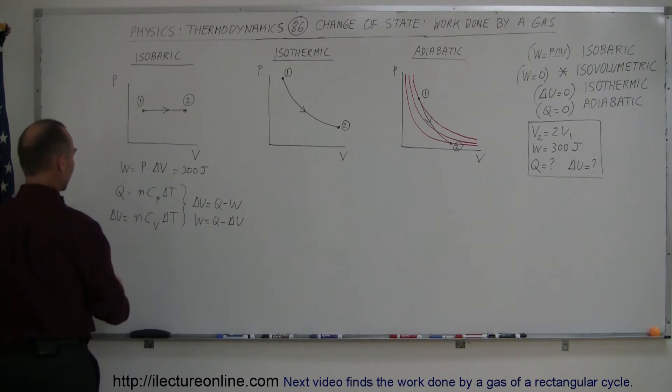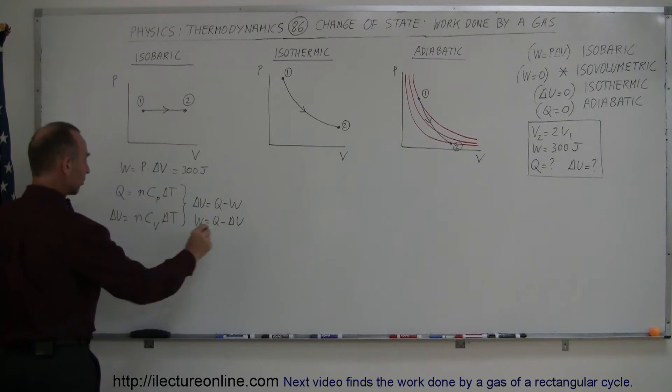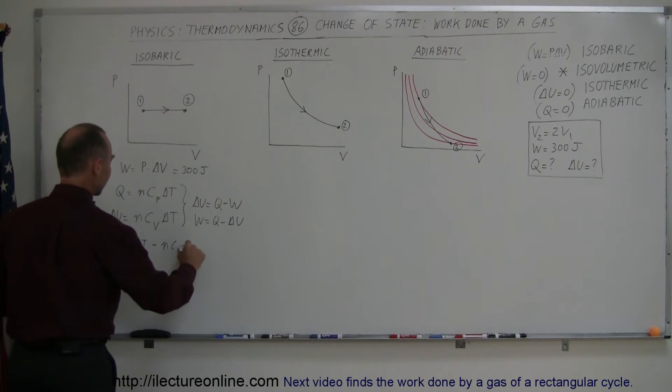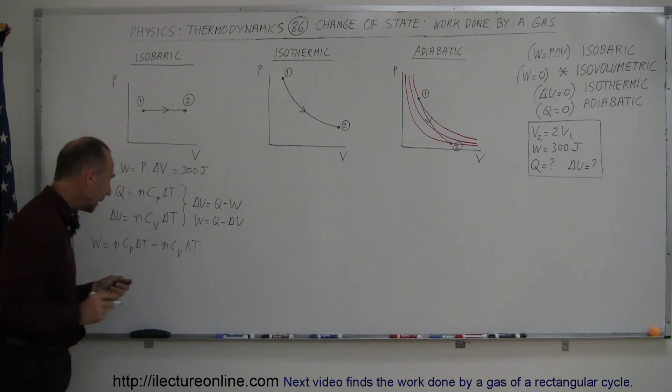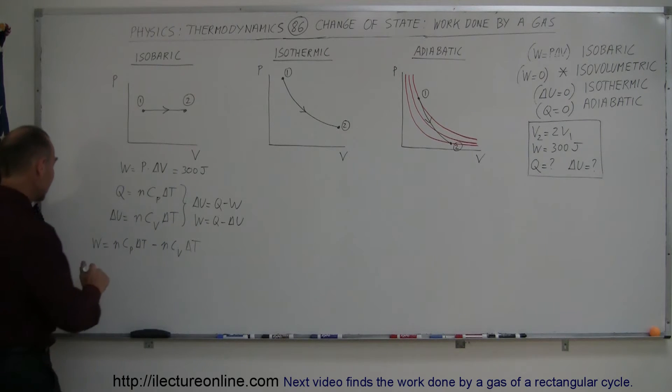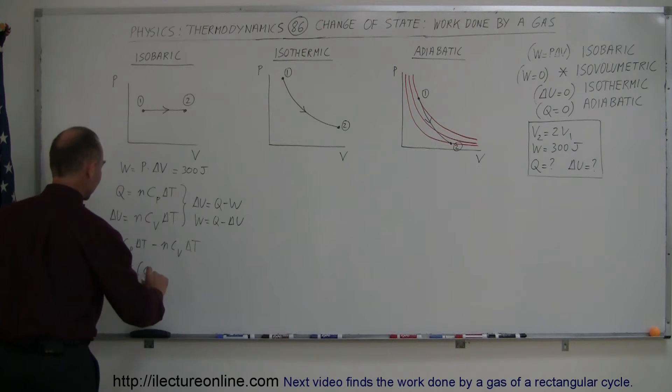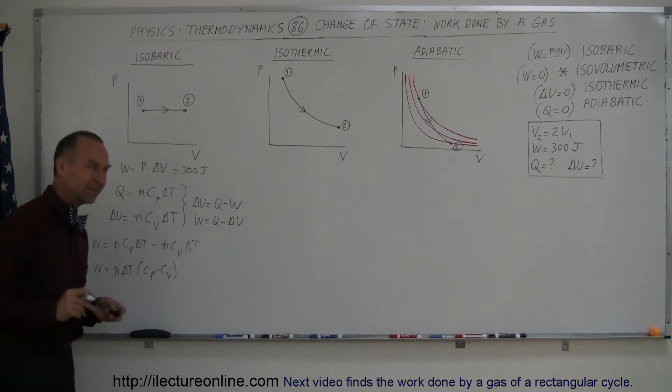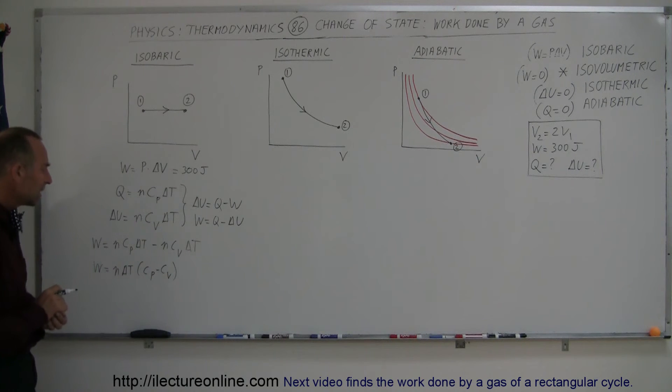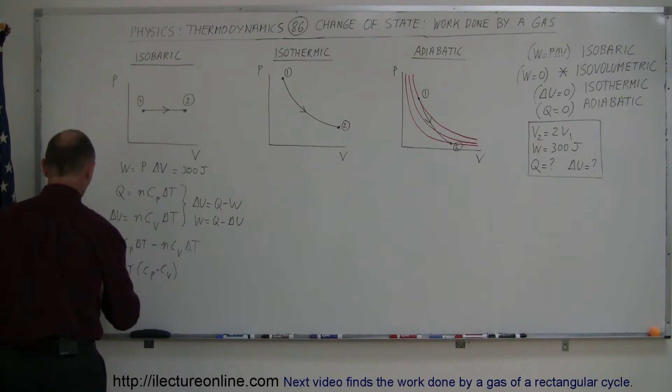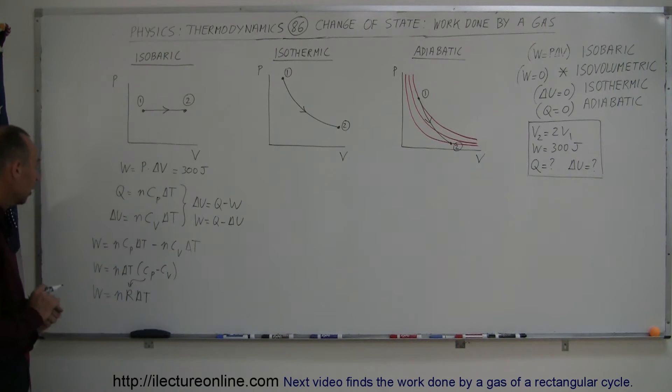If we subtract those two from one another, we can say that W, which is equal to Q minus delta U, is equal to N C sub P delta T minus N C sub V delta T. And then if I factor out an N and a delta T, that becomes W is equal to N times delta T times C sub P minus C sub V. And C sub P minus C sub V is equal to R. That's the gas constant. So W is equal to N R delta T by replacing C sub P minus C sub V by R.